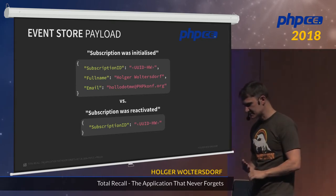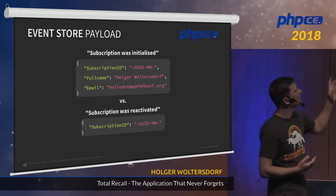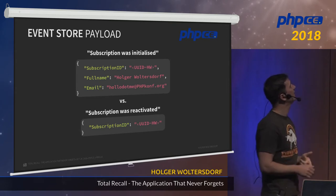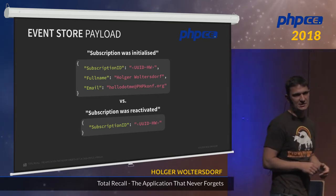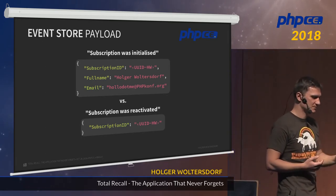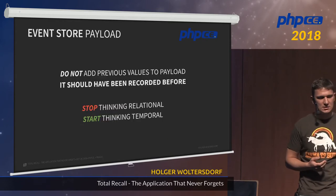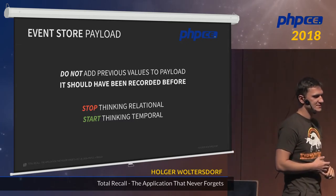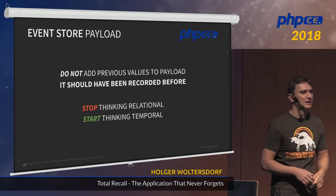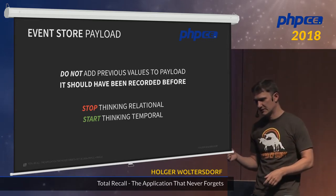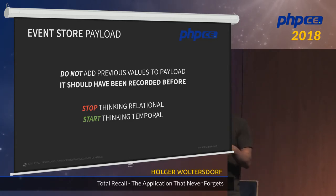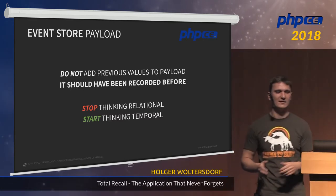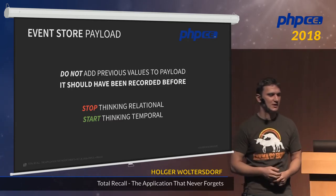This is why reactivation is different from initialization: on first initialization I need to create a subscription ID, full name, and email address. When I reactivate, I just need the ID. Do not add previous information to new events because they were already recorded before — you have them in your timeline. That is the point where you should stop thinking relationally. Instead of replacing information in the database, you're just appending things. Everything you already had before is still there and you can use it.